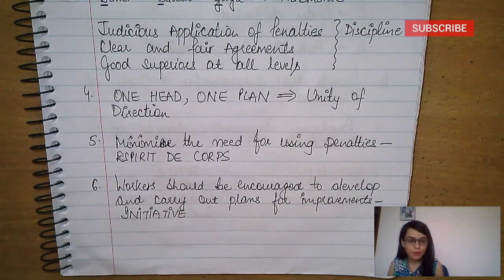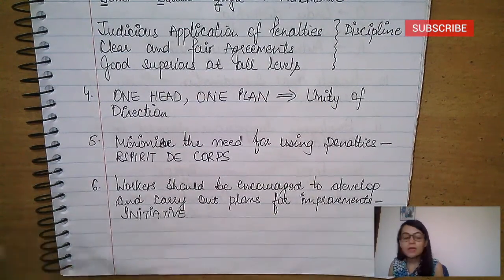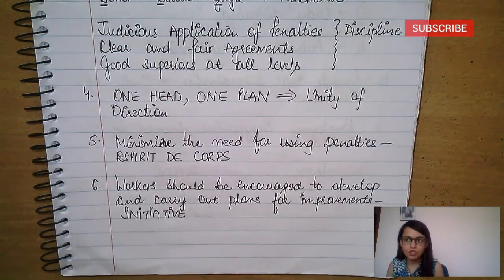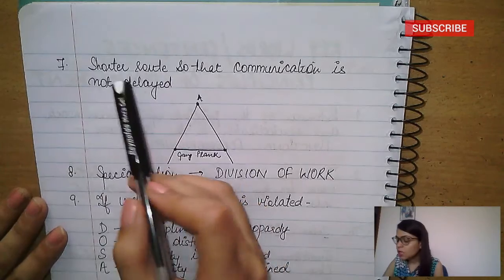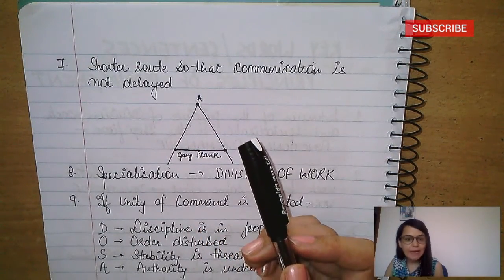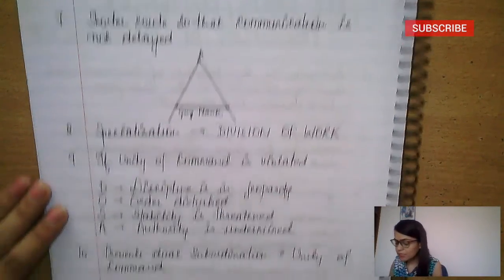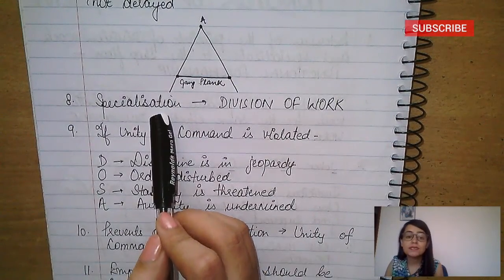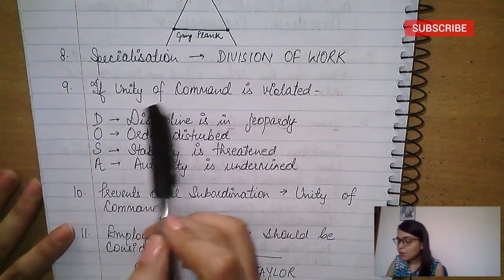For esprit de corps: team spirit, mutual trust, cooperation. For initiative: workers should be encouraged to develop and carry out plans for improvements. They should be encouraged to think of something new and act on it. For scalar chain: a shorter route so that communication is not delayed in case of emergency — that is gangplank.